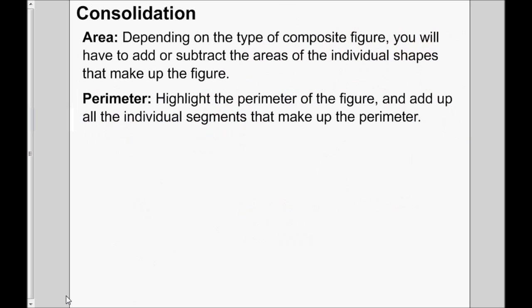Just to sum things up: for the area, depending on the type of composite figure, you'll either add or subtract the areas of the different shapes — understand when to add and when to subtract. For the perimeter, highlight the outside of the figure and add up the different parts, and sometimes you'll need to calculate the circumference of a curved section like a semicircle. Hopefully this video has made calculating the area and perimeter of composite figures a bit more clear. Good luck!